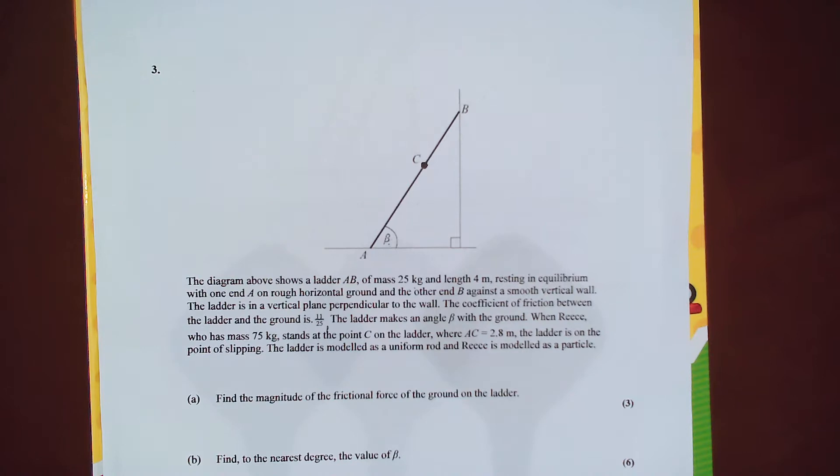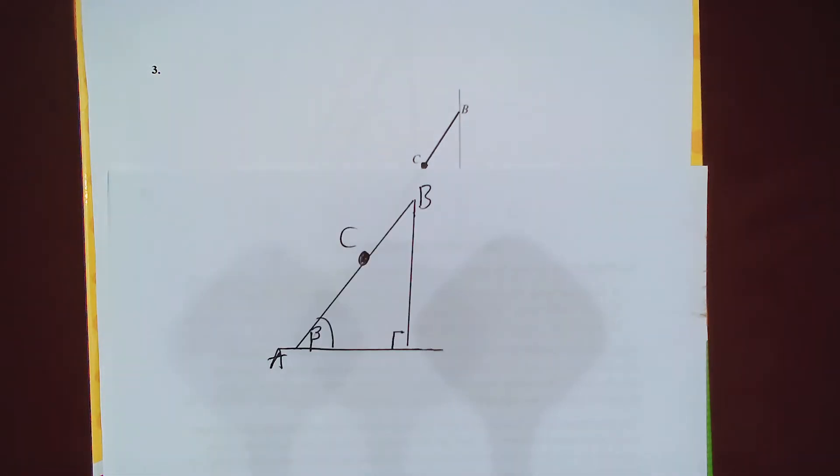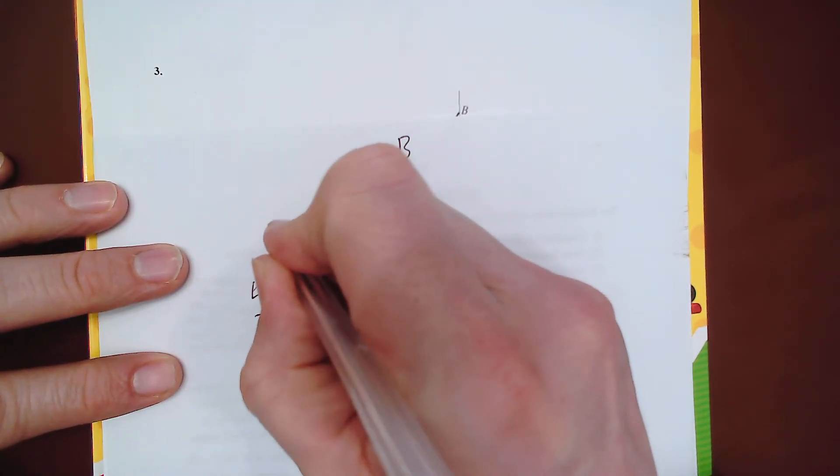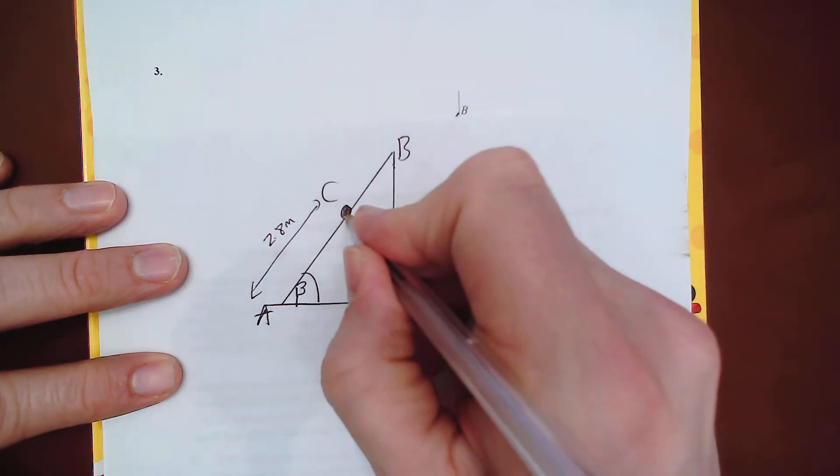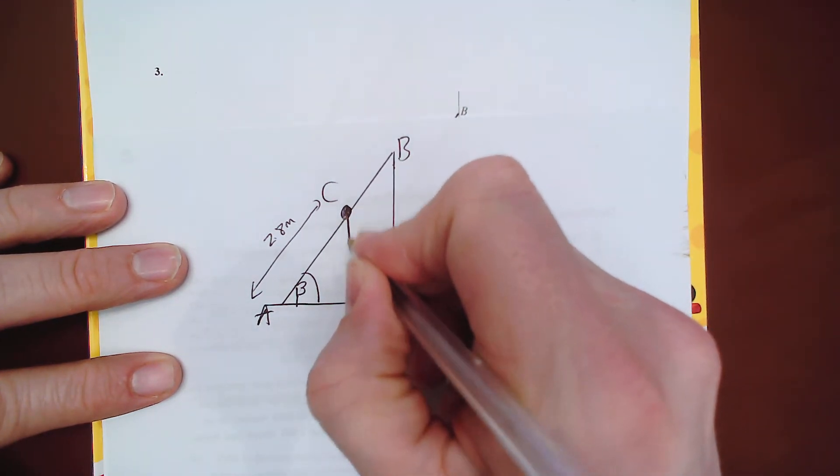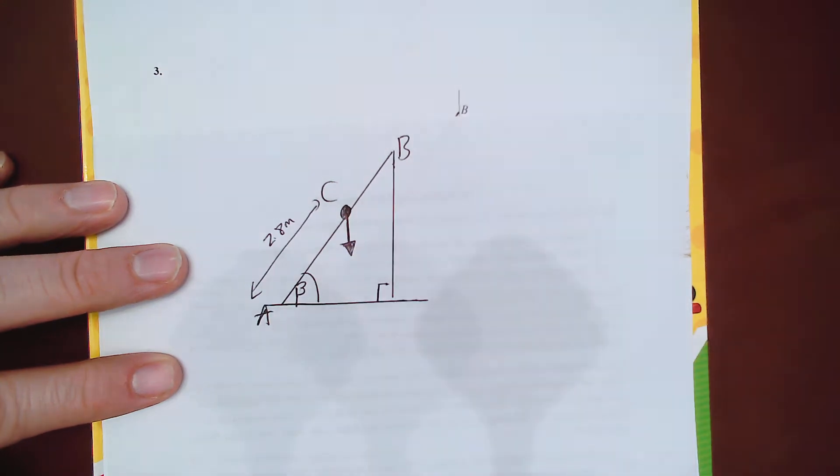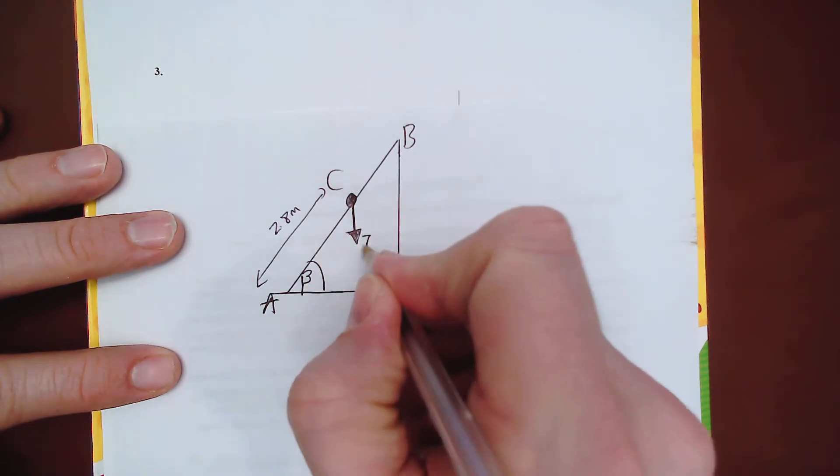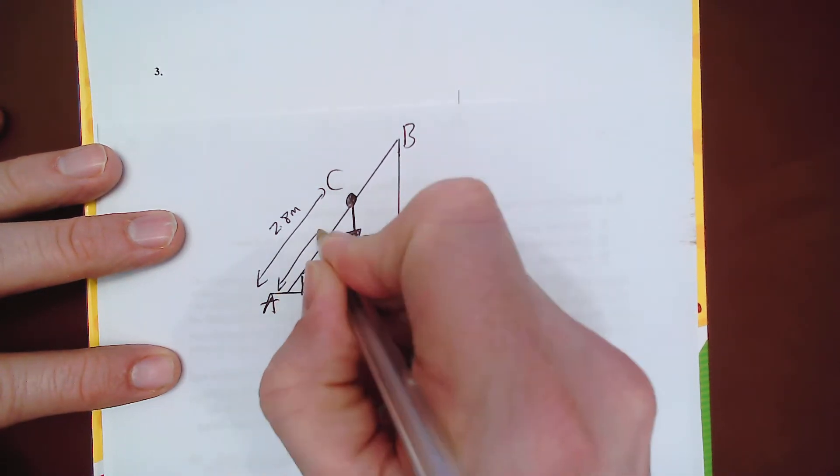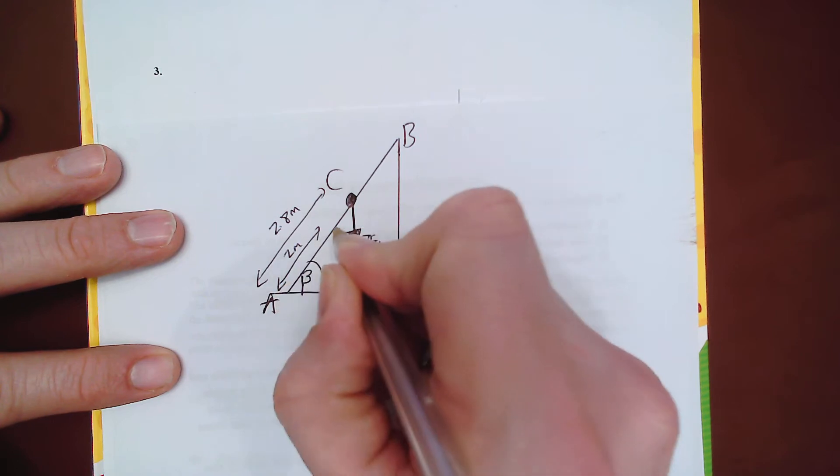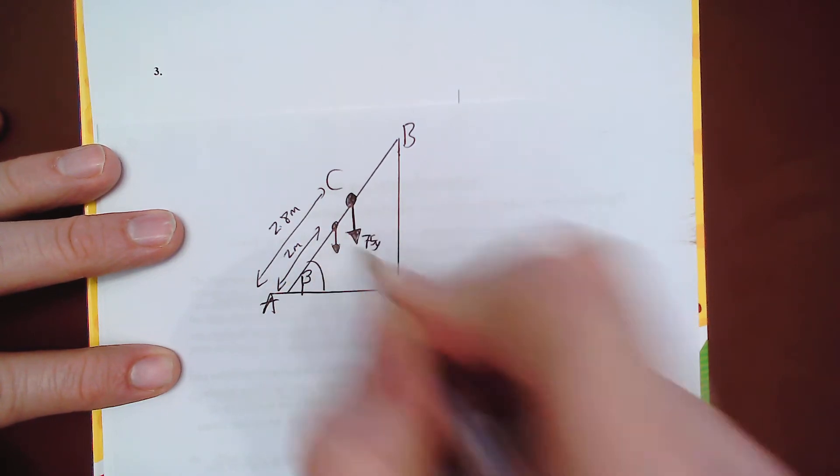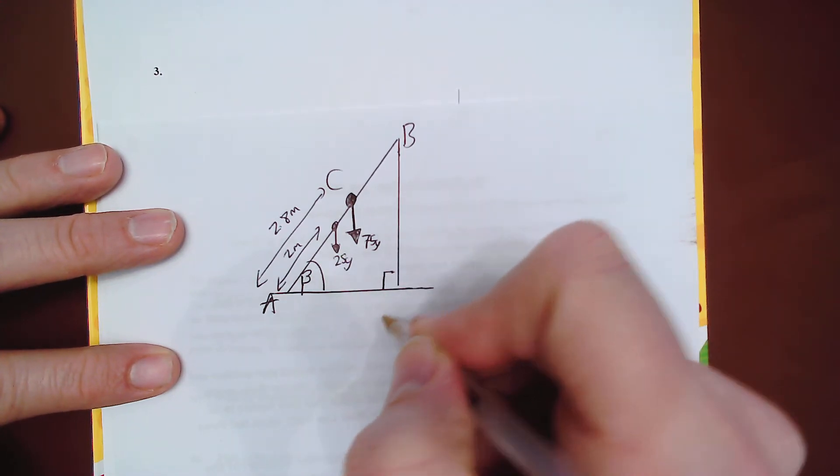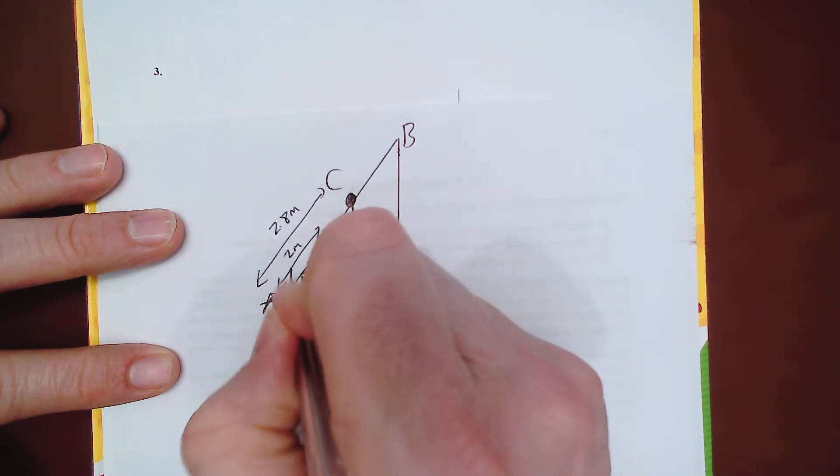I'm going to just add my own diagram to this. So I know Reese is 2.8 meters there. I know we've got coming down from there Reese's weight which is 75g. Halfway along the ladder because it's a uniform rod.